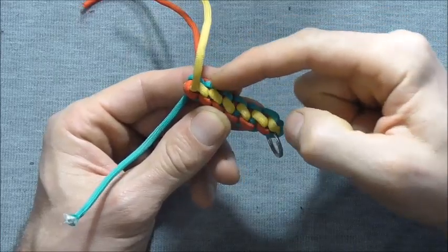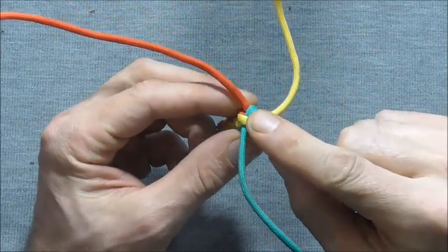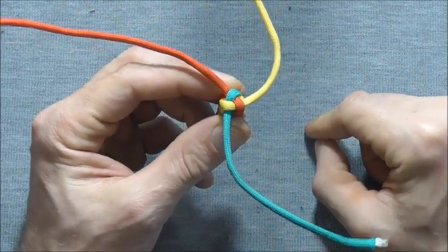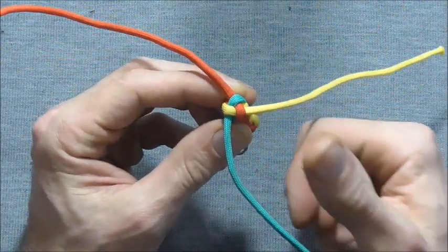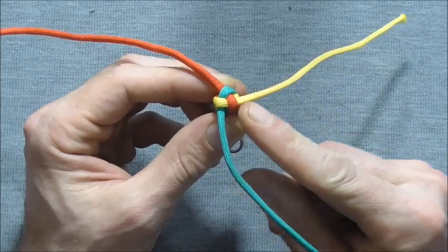So once you get this to the desired length you can finish this off just by tightening this crown right up, and then cutting off these excess pieces here, and then singeing them off with a lighter and pressing them flat.